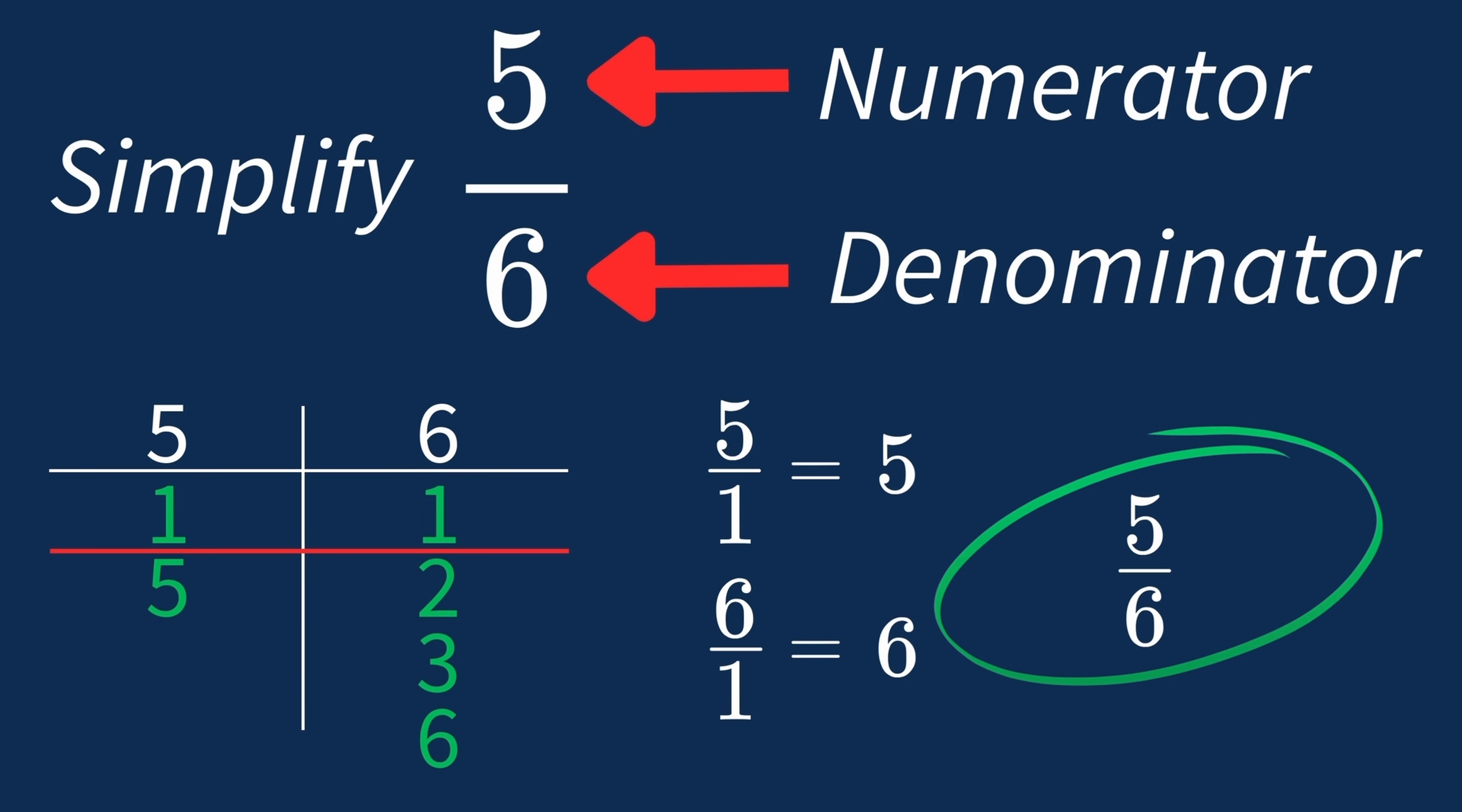In this problem, we follow the standard process of dividing by the highest common factor. However, in the future, if the highest common factor is 1, the fraction is already in its simplest form, so no further division is needed.